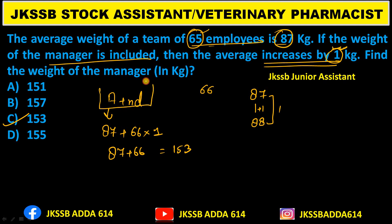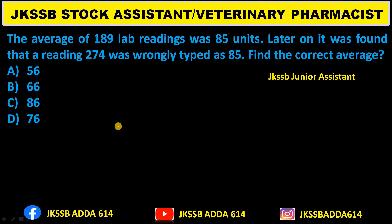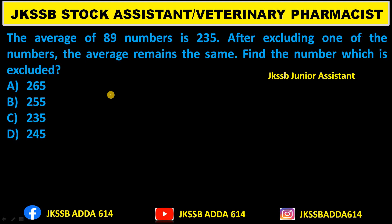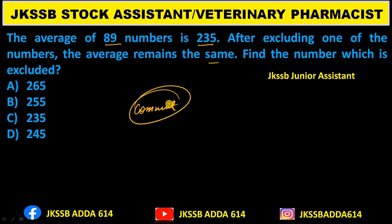These questions were asked in Junior Assistant. Now, a practice question for you: the average of 18 numbers is 235. After excluding one of the numbers, the average remains the same. Send your answer in the comment section while watching the video.